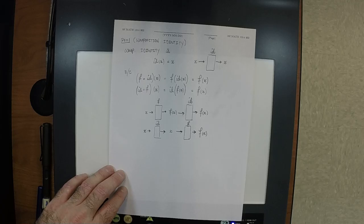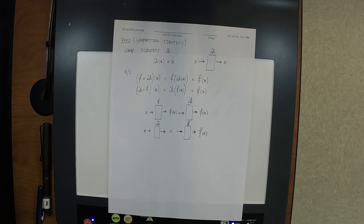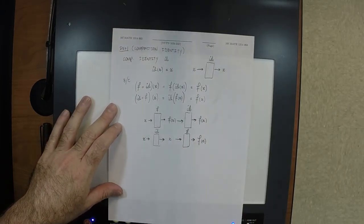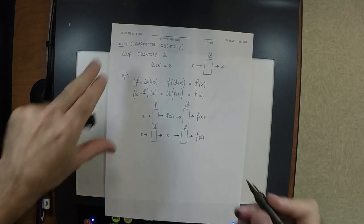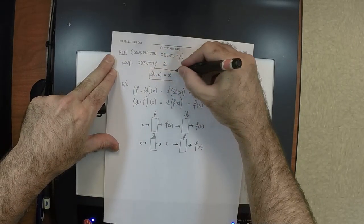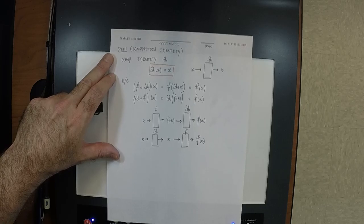You have to have an identity so you can know what it means to invert something — the same idea as: if adding zero doesn't do anything, what's the point of even having zero? You have to know the additive identity so you can be sure that negative 7 is the additive inverse of 7. So: the additive identity is zero, the multiplicative identity is one, the compositional identity is this function id, where id of x equals x.